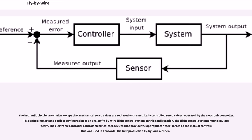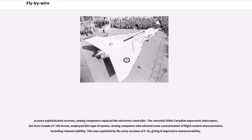The hydraulic circuits are similar except that mechanical servo valves are replaced with electrically controlled servo valves operated by the electronic controller. This is the simplest and earliest configuration of an analog fly-by-wire flight control system. In this configuration, the flight control systems must simulate feel, and electronic feel devices provide the appropriate feel forces on the manual controls. This was used in Concorde, the first production fly-by-wire airliner.